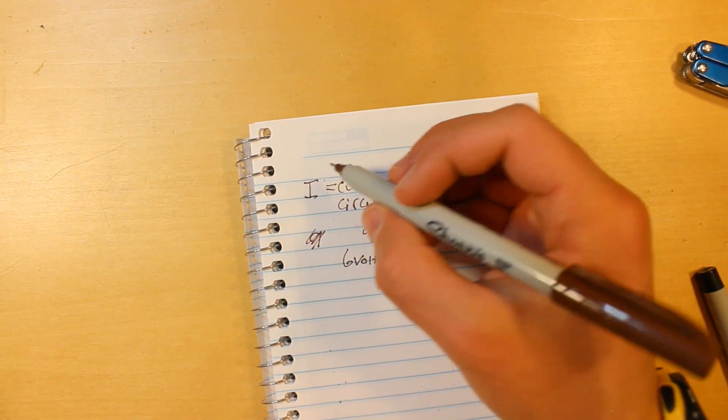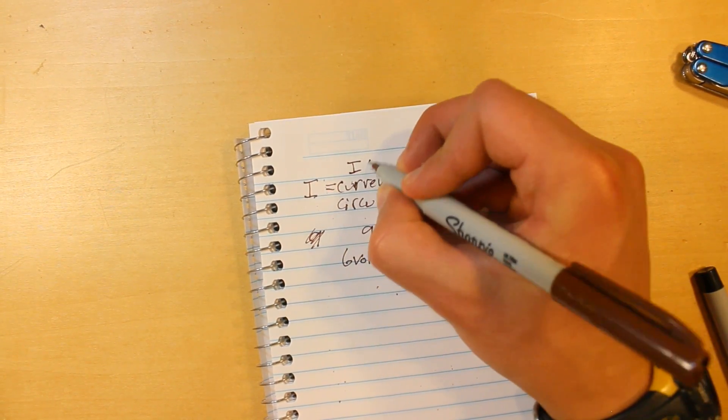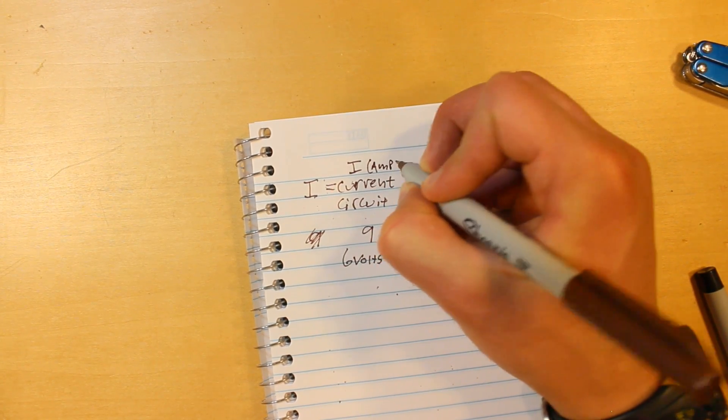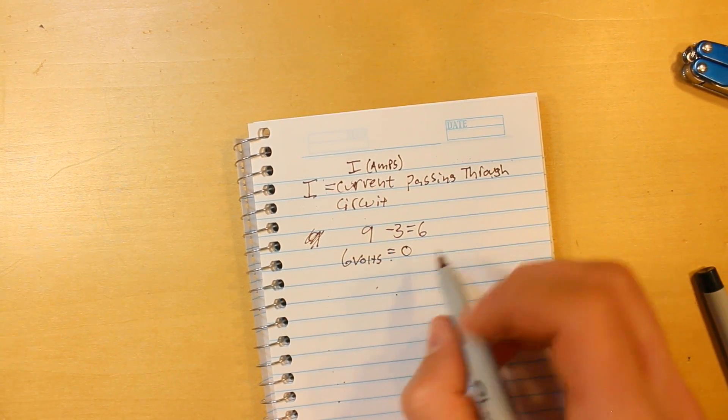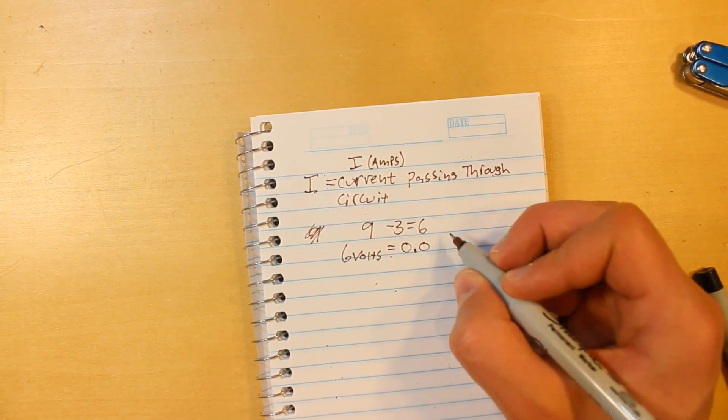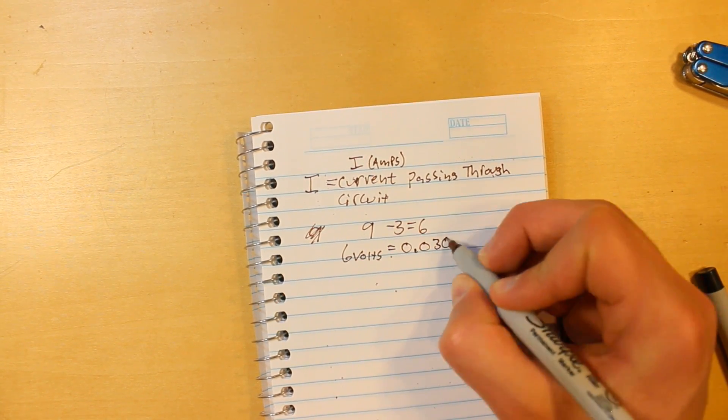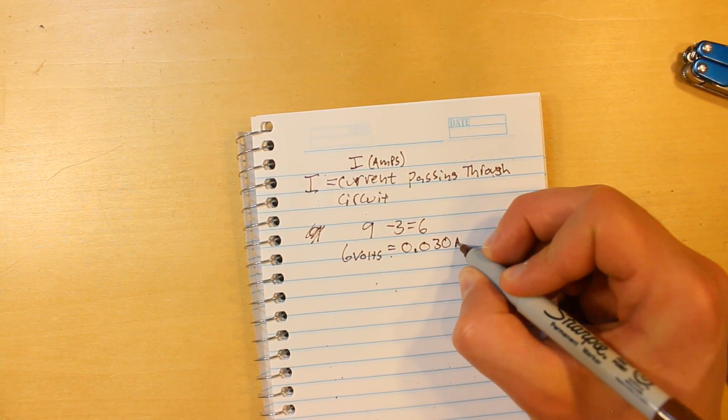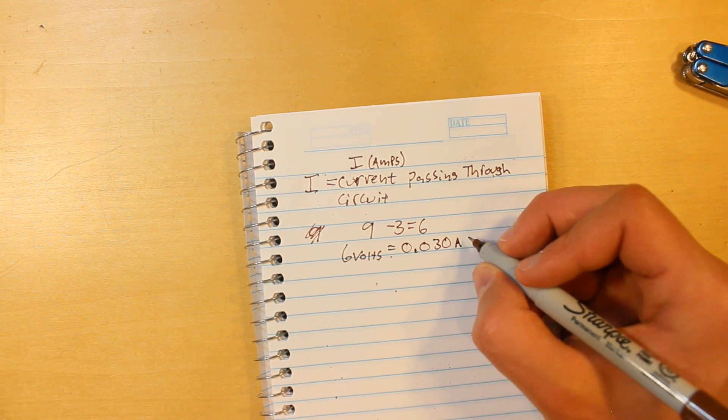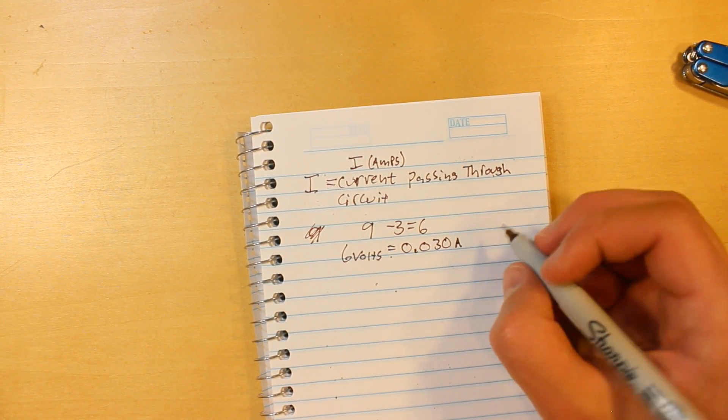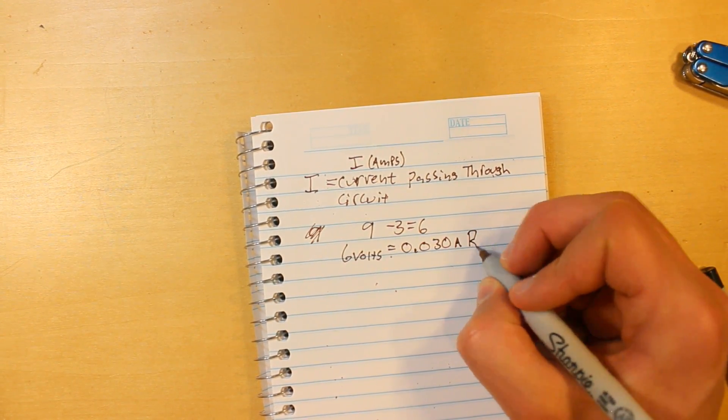So current is, I should write this down, current is measured in amps, not milliamps. So if we have 30 milliamps, we would need to write 0.030 amps, and 0.03 amps would be I, and then we'd have the R, which is the resistance.